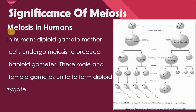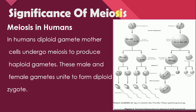Let us understand this with the example of gamete production in humans. In humans, diploid gamete mother cells undergo meiosis to produce haploid gametes. These male and female gametes unite to form a diploid zygote. As we know, the diploid number of chromosomes in human beings is 46. So as these gamete mother cells undergo meiosis, they produce male and female gametes like sperms and ova with haploid number of chromosomes.